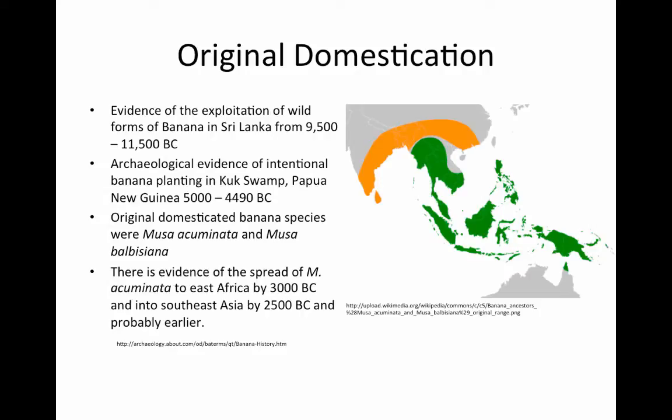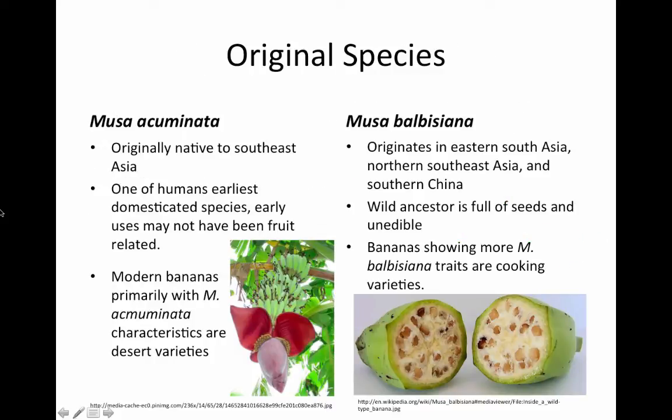...and into Southeast Asia by 2,500 B.C., and probably earlier. Originally, the Musa acuminata banana is native to Southeast Asia. It is one of humans' earliest domesticated crops, and its early uses may not have been fruit-related.